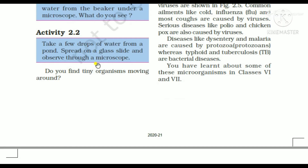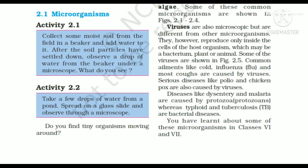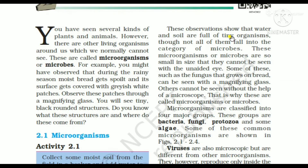Activity 2.2: Take a few drops of water from a pond, spread them on a glass slide and observe through a microscope. What do you find? You will observe tiny organisms moving around. This shows that water and soil are full of tiny organisms, though not all of them fall into the category of microbes.